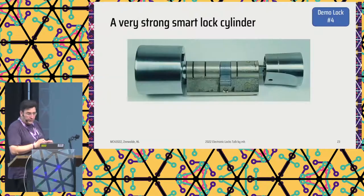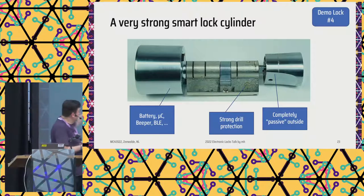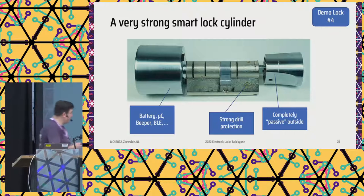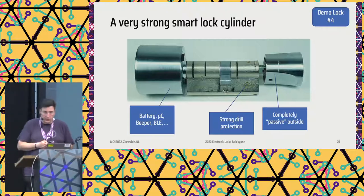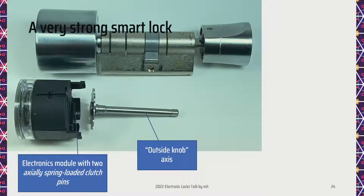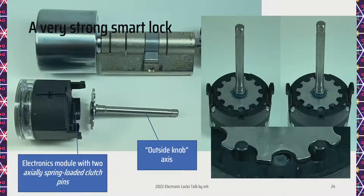Bumping again, another lock. This is a very strong smart lock cylinder, designed very well — all the electronics parts are on the inside of the door, only strong metal on the outside with strong drill protection. You can see the SKG three star sign here. So that is a strong lock. Taking it apart, you can see there are actually spring-loaded clutch pins. If you look at this knob, on the left picture the pins are not engaged, but on the right side they came out — zooming in, you can see them going in and out. When they're out, it's coupled. And that's the problem you'll see when we bump it.